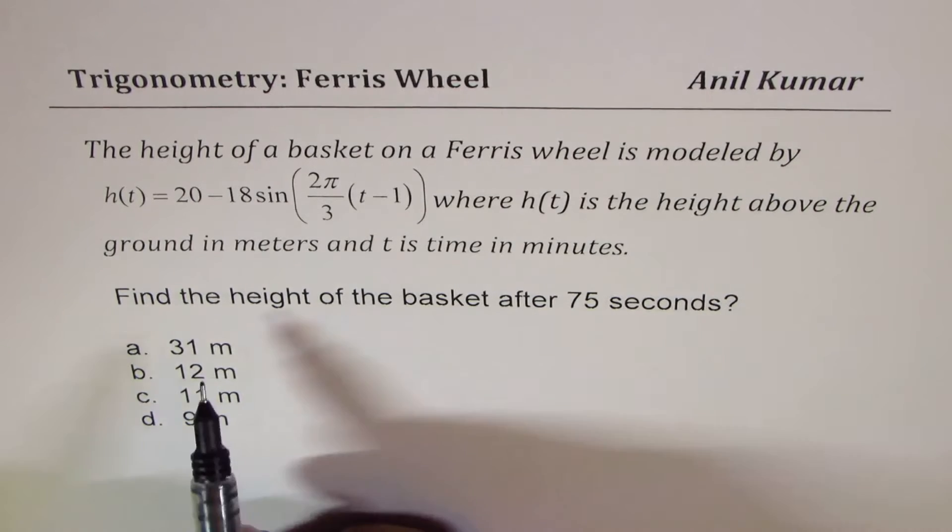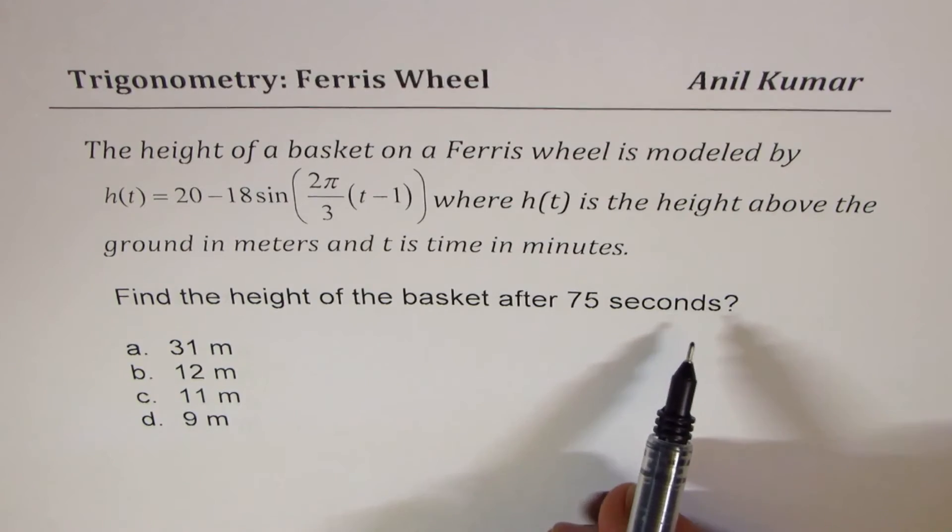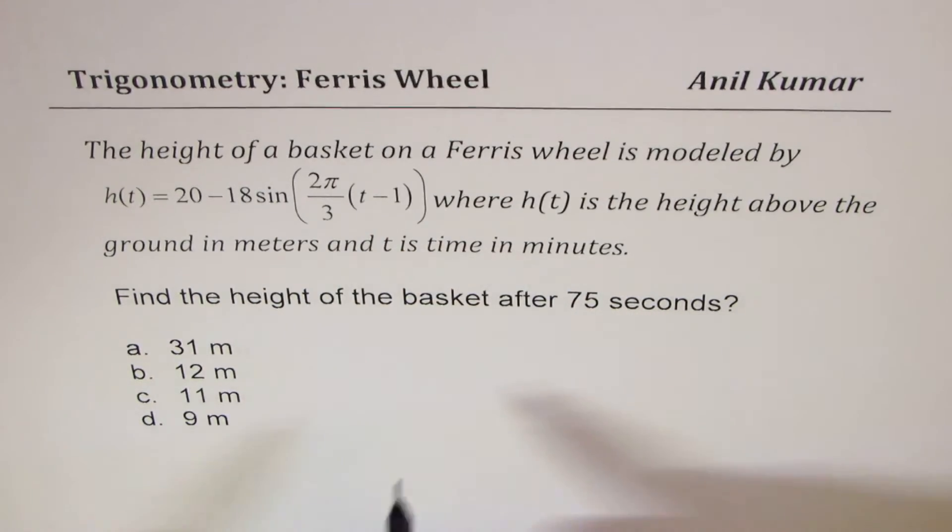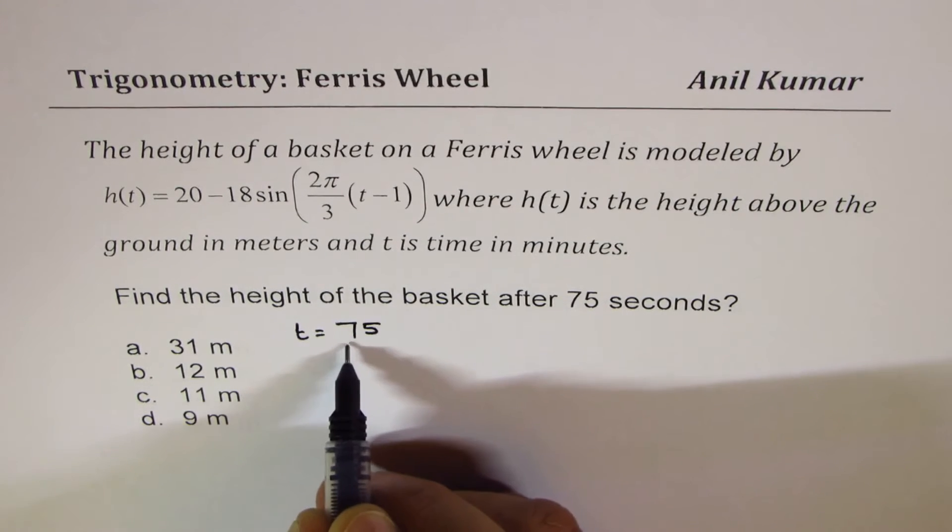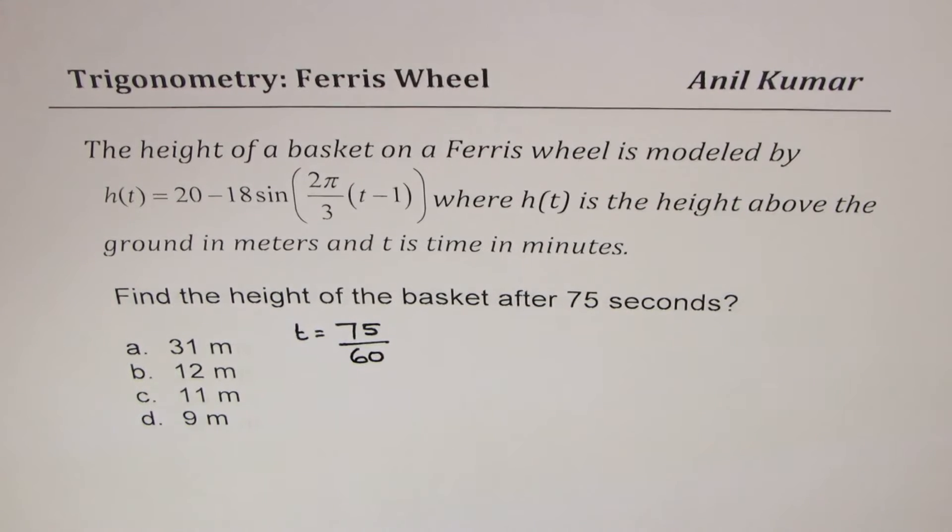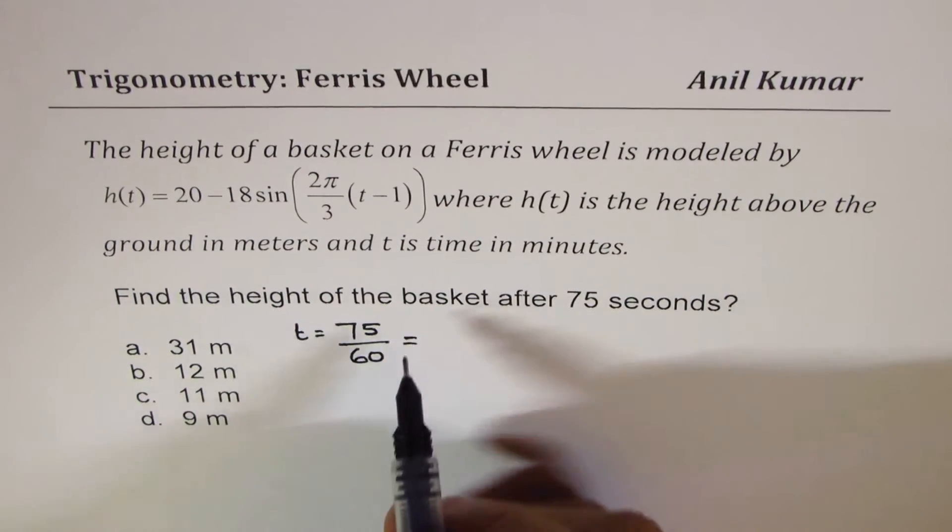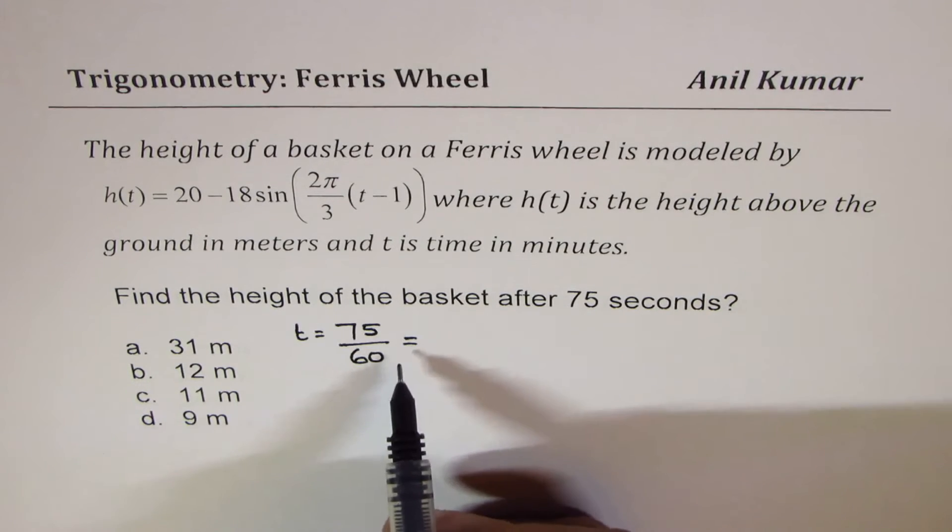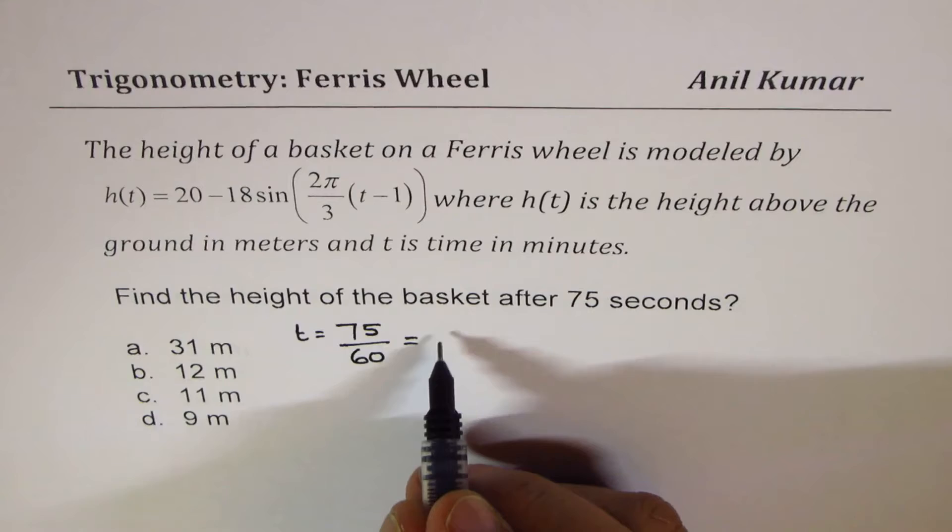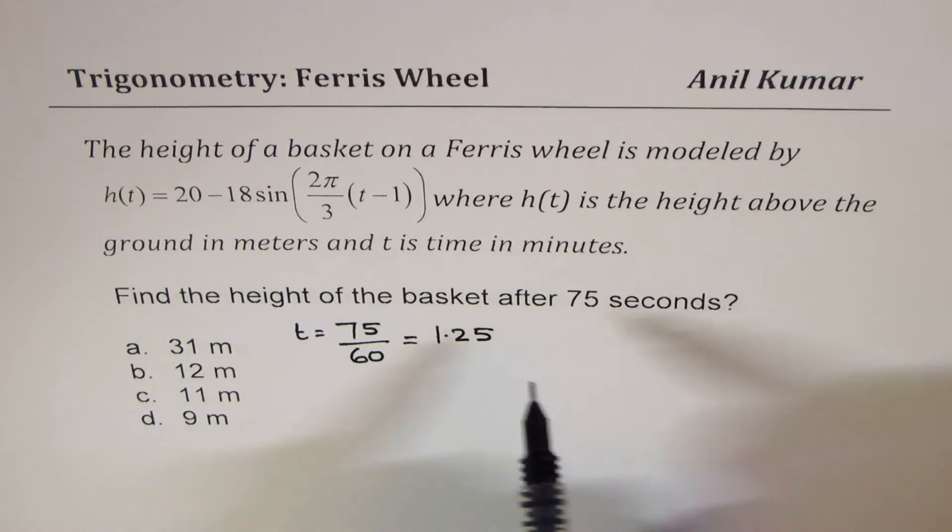The next question here is, find the height of the basket after 75 seconds. Basically, we have to substitute t with 75 seconds. But remember, time is in minutes. So we have to divide 75 by 60. This is very important to do. So divide 75 by 60, plug it in here, and calculate the answer. You could do it approximately. 75 means 1 full and then 15. So it is 1.25.